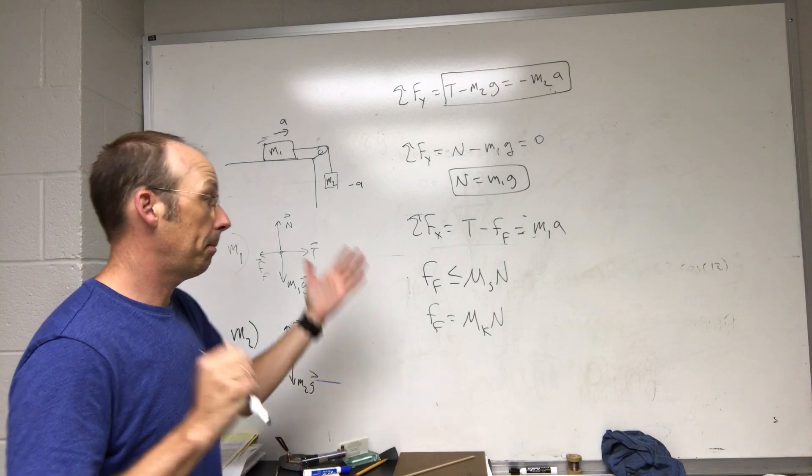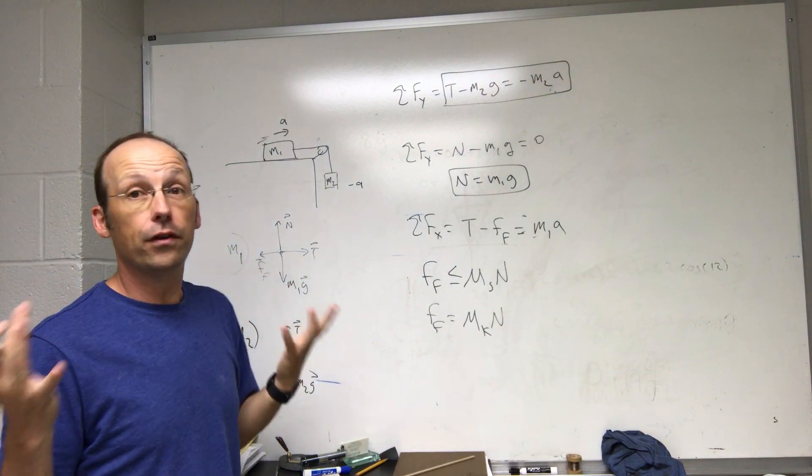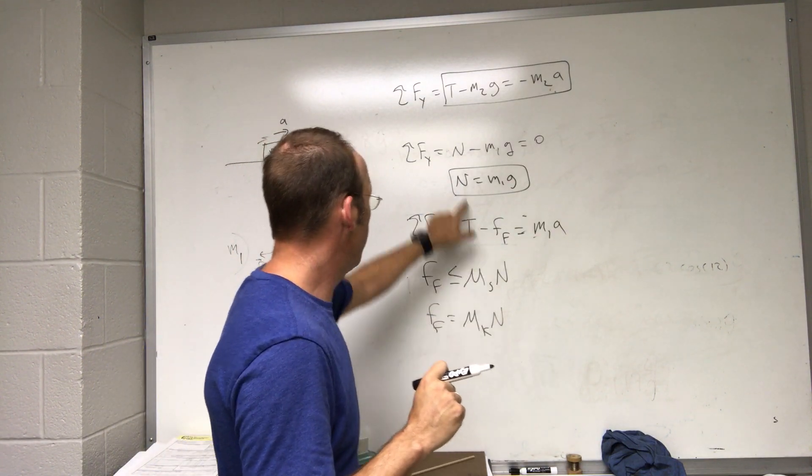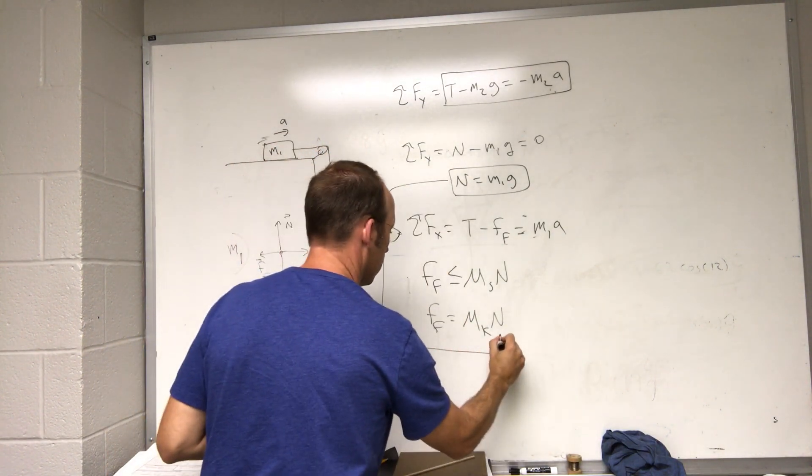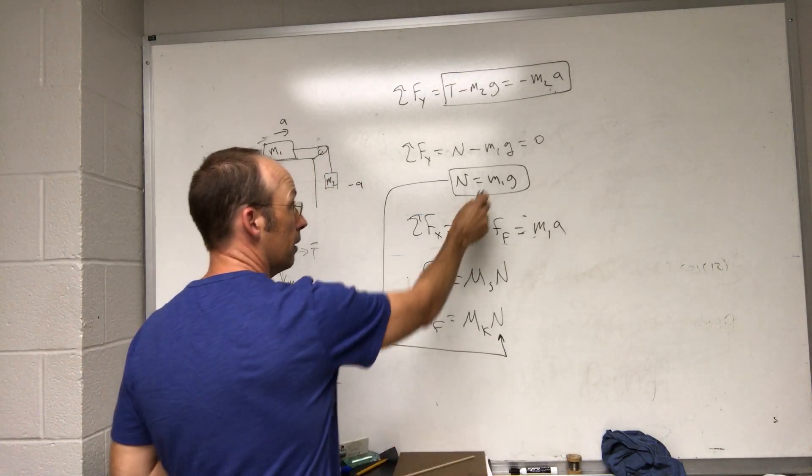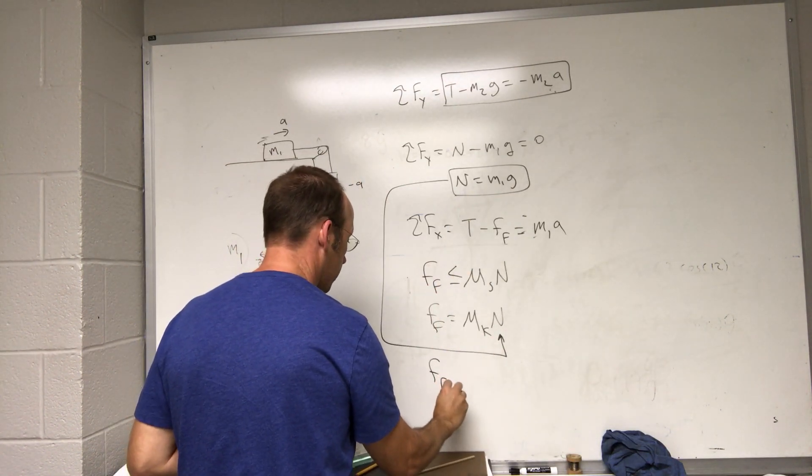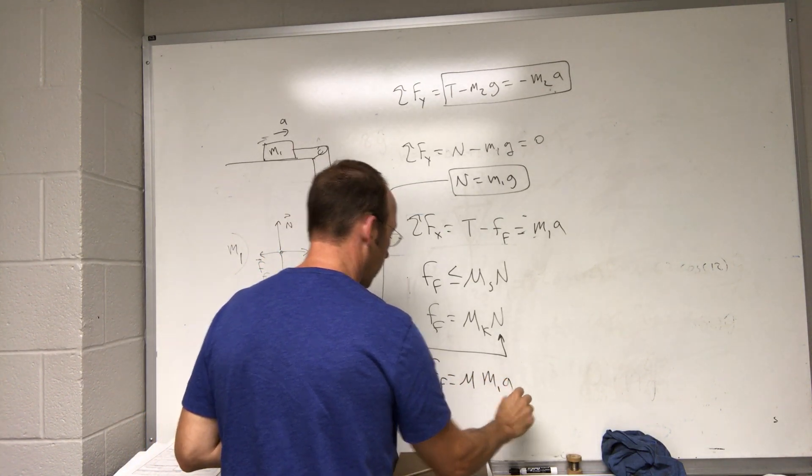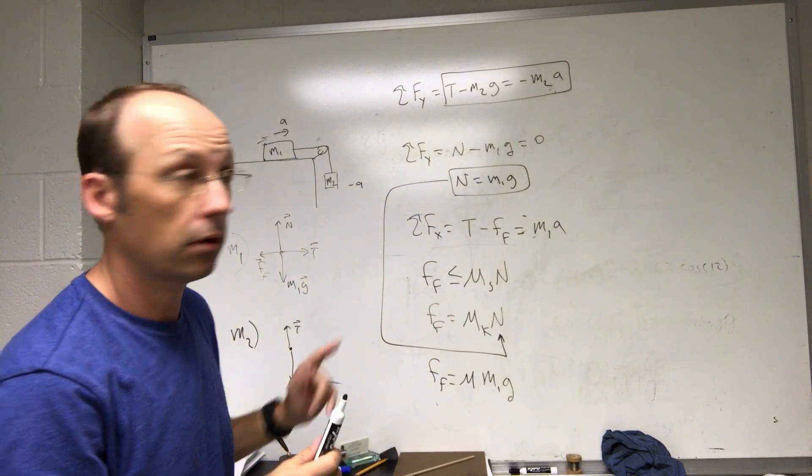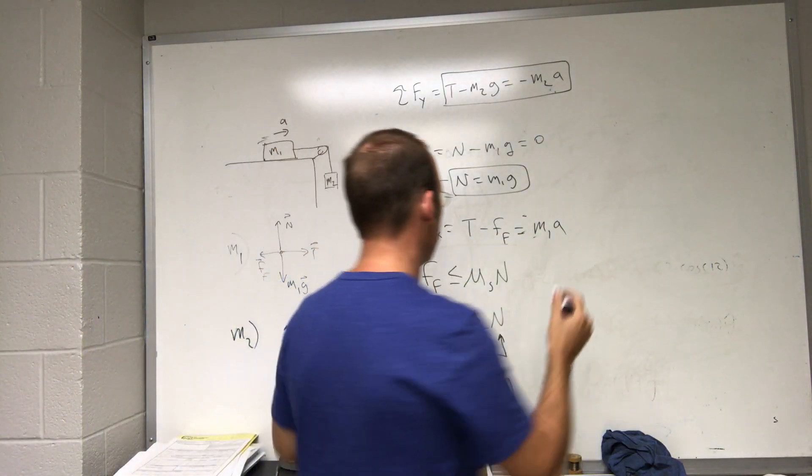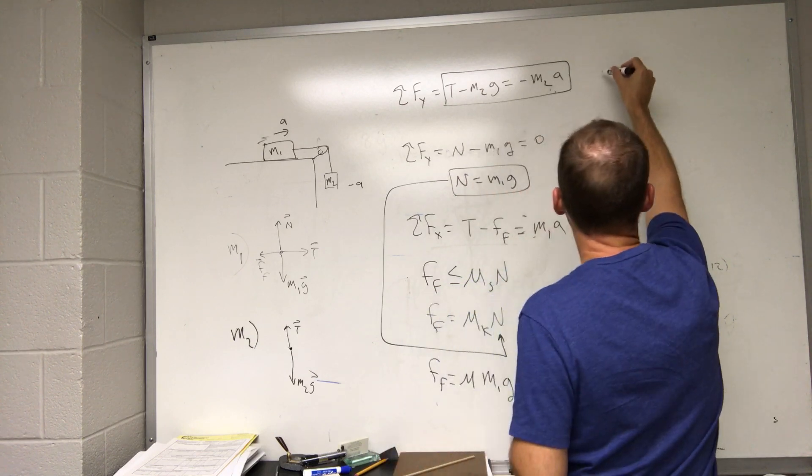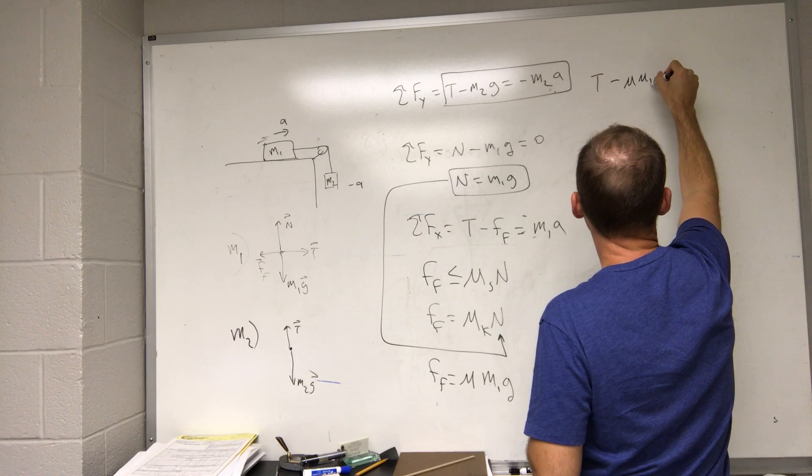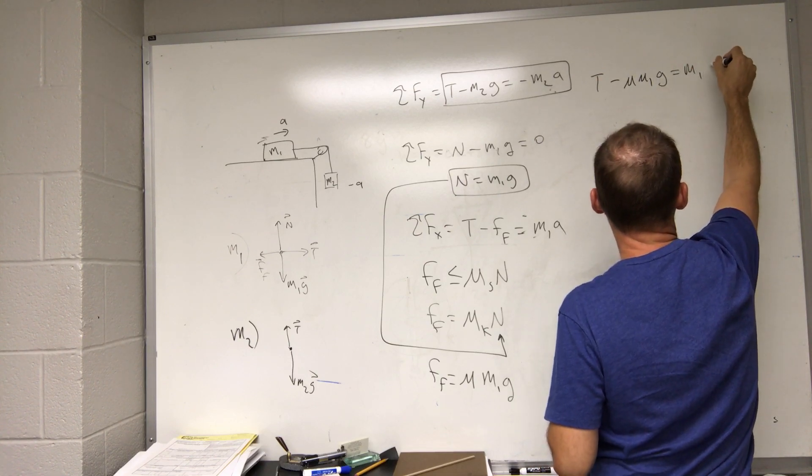But let's just say it's some coefficient right now, it's some coefficient. And if I use this to plug in for N that N is equal to m1 G, then the friction force is going to be equal to mu m1 G. Let's just say it's sliding for now. So I can rewrite this equation as T minus mu m1 G equals m1 a.